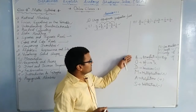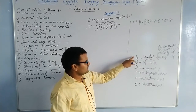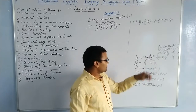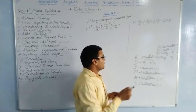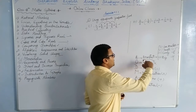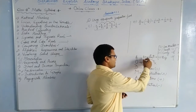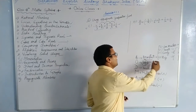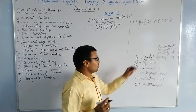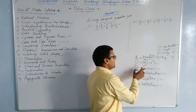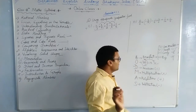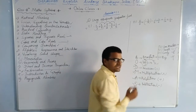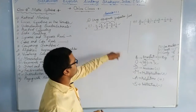BODMAS shows the order of solving operations. First we solve brackets, then if 'of' appears we replace it with multiplication, then we do division, then multiplication, then addition, and finally subtraction. We will apply this rule to the given sum.